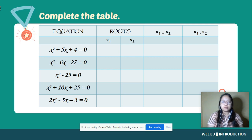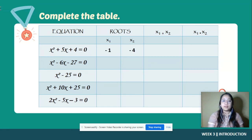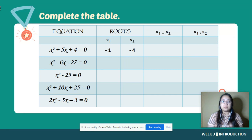Equation number one: x squared plus five x plus four is equal to zero. As you can see, the equation is factorable, so we can use factoring. Using that method we can come up with negative one and negative four. To fill in the third column we add the two roots: negative one plus negative four is negative five.